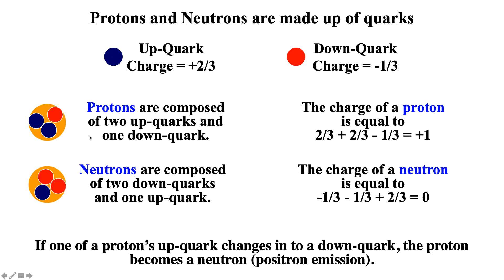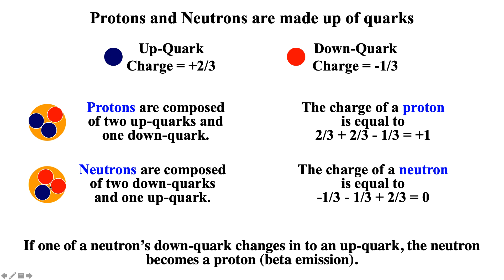If a proton's up quark changes into a down quark, the proton is actually changing into a neutron. For most radioactive decays, we can think about this on three different levels: in terms of an up quark changing to a down quark, in terms of a proton changing into a neutron, or in terms of going from one element to another element. Likewise, if a neutron's down quark changes into an up quark, a neutron changes into a proton, again going from one element to another.